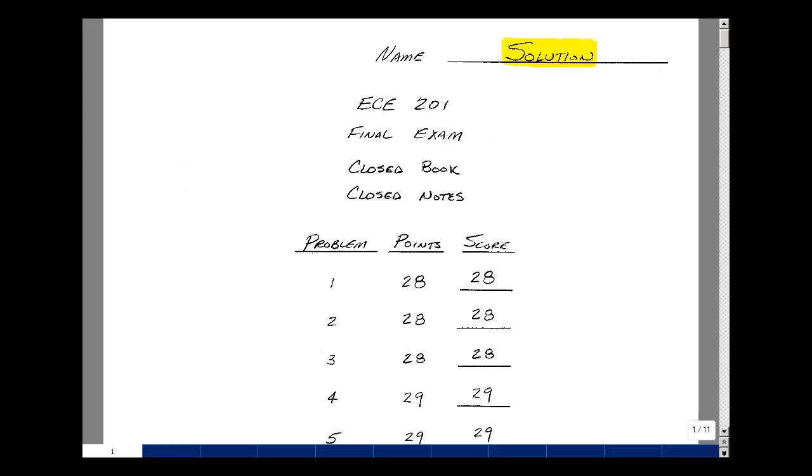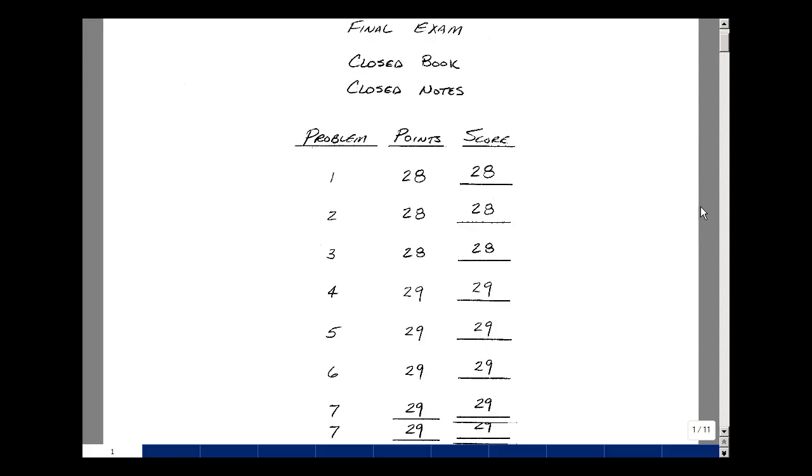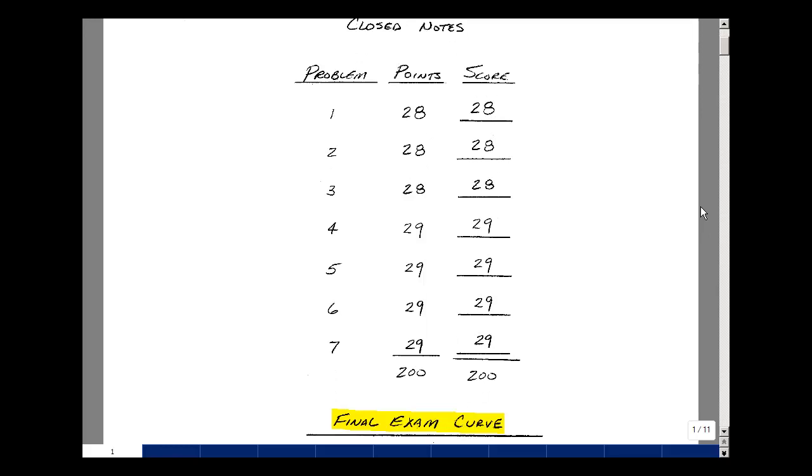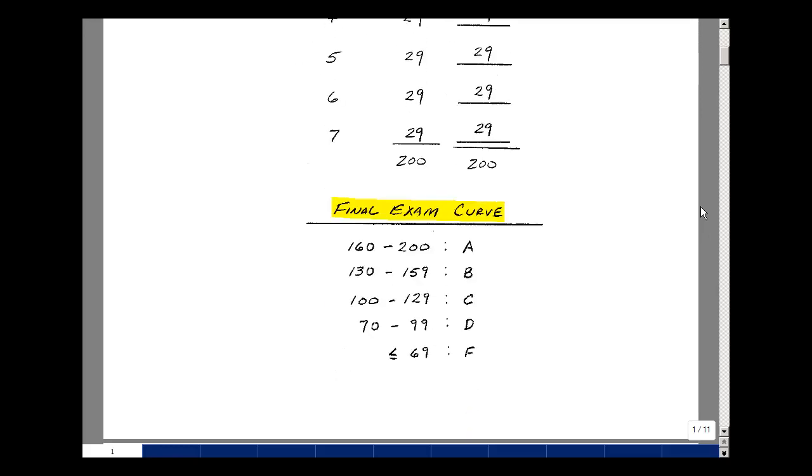This lesson deals with the solution to the final exam. You can find this final exam solution near the end of the ECE 201 eBook. The final has 7 problems, each worth 28 or 29 points, giving a total of 200. This was the actual final exam I gave when I taught the course recently, and based on the average and standard deviation, this is the curve for the final.